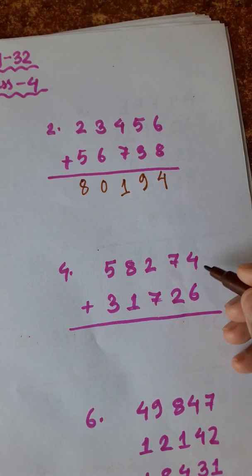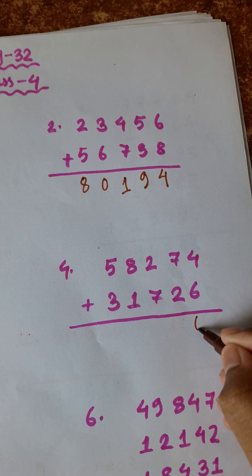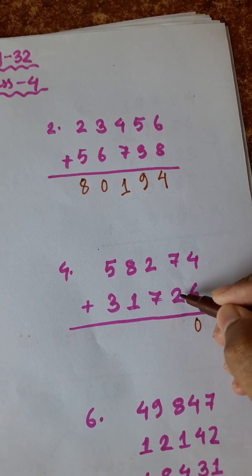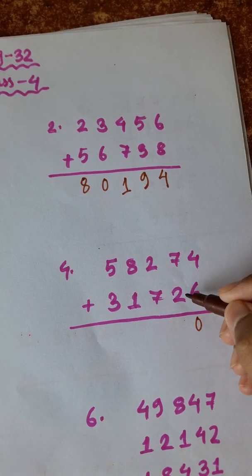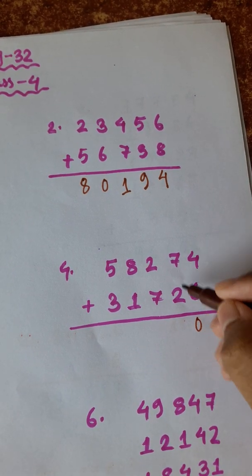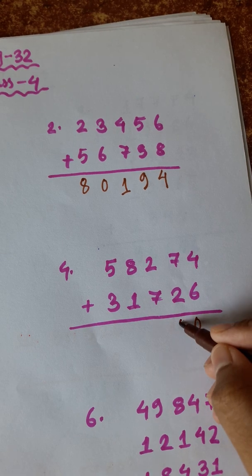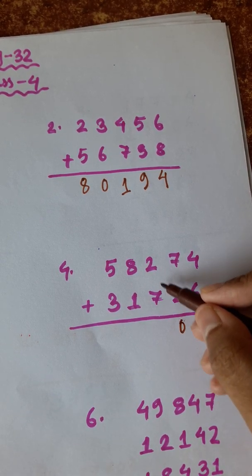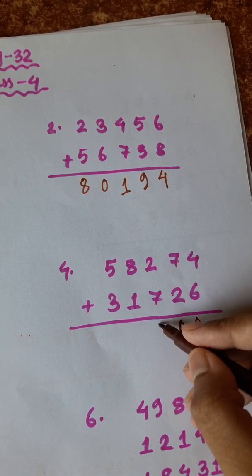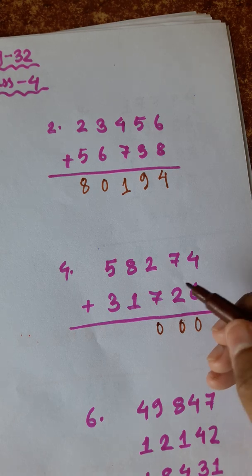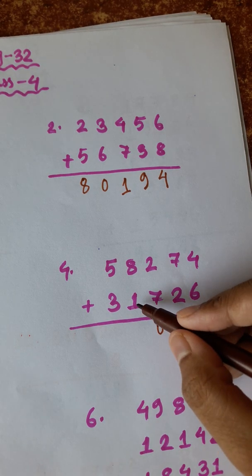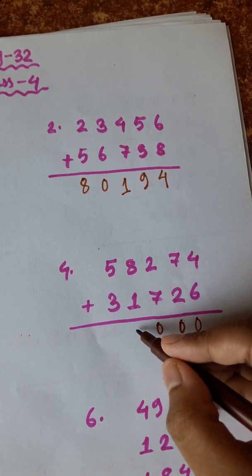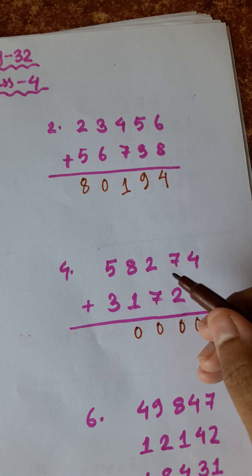6 plus 4 is 10, 11, 12, 13. 7 plus 3 is 10, is 0. 7 plus 1, 8 plus 2, 10 is 0. 1 plus 1 is 2. 8 plus 2 is 10, 0. 8, 8.